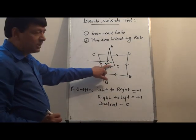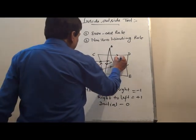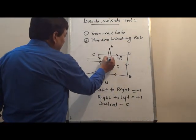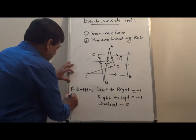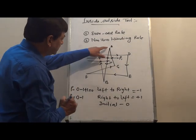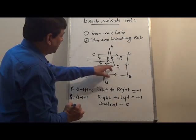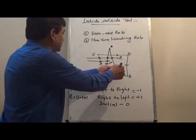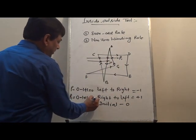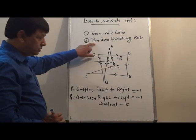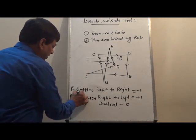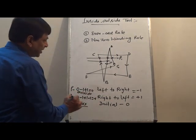Again I take another point V1. This is the scan line with the first, second, and third crossings with the polygon edges. Initial value is 0. First crossing left to right: minus 1. Second crossing left to right: minus 1. Third crossing right to left: plus 1. Fourth crossing left to right: minus 1. Total sum is minus 1 minus 1 plus 1 minus 1, which is non-zero. Non-zero means the point is inside the polygon. When the sum is 0, the point is outside the polygon. Thank you very much.